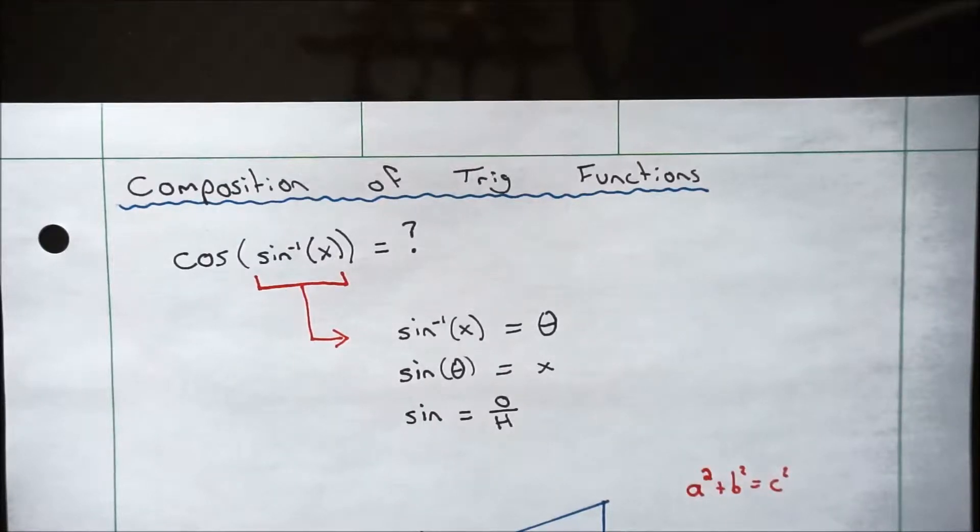Composition of trig functions is a way to take something really ugly like this and turn it into a function of x that you can do further math on. It comes in handy a lot when you're trying to take a derivative or an integral of some nasty trig function like that.